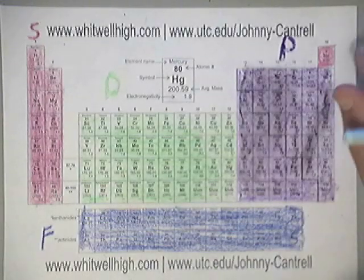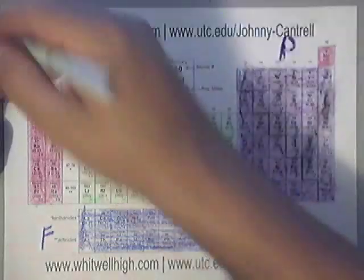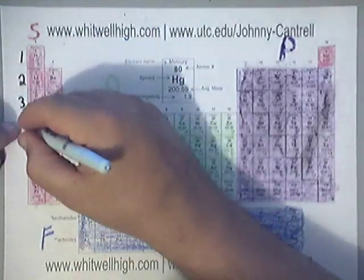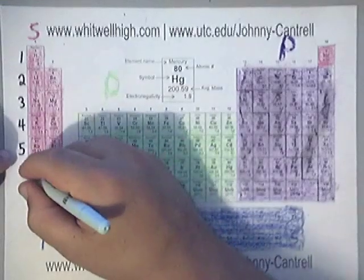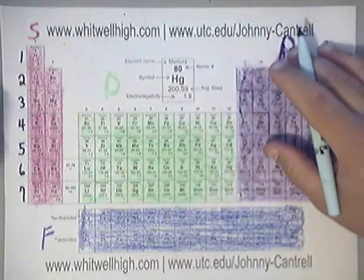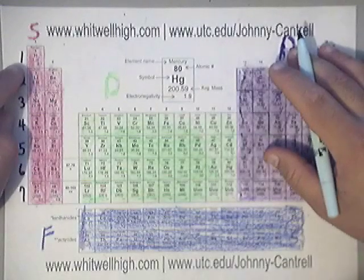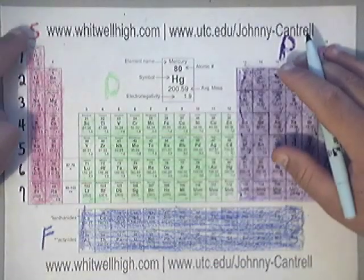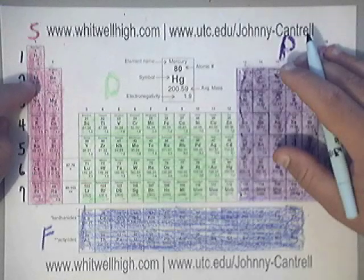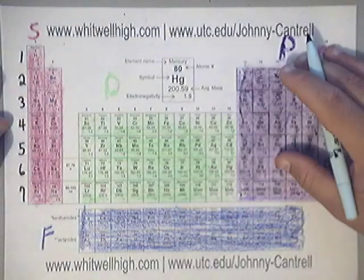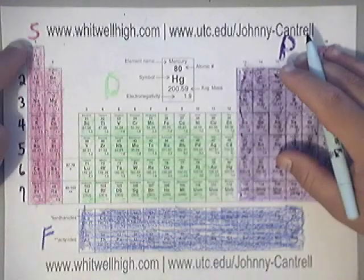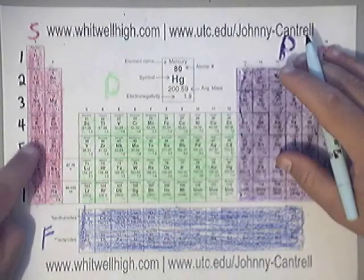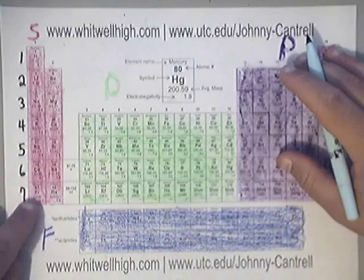You need to know your principal quantum numbers. Row one would be one, row two would be two, row three would be three, row four would be four, row five would be five, row six would be six, and row seven is seven. So basically everything in this first column, by location for electronic configurations, is 1S1. The next one would be 2S1, then 3S1, 4S1, 5S1, 6S1, 7S1.